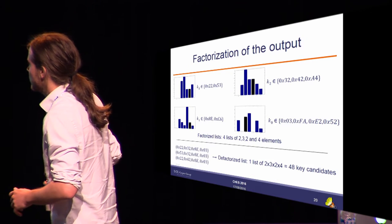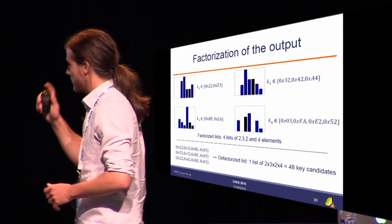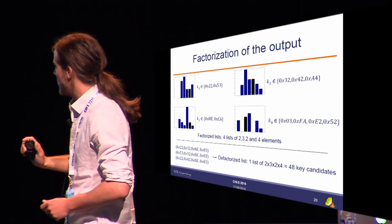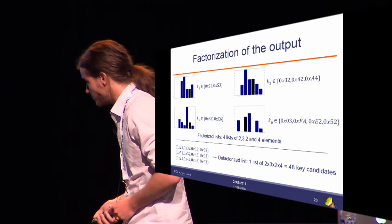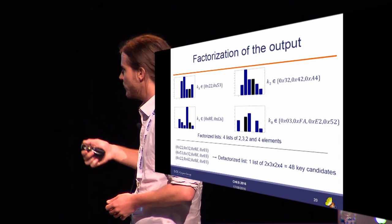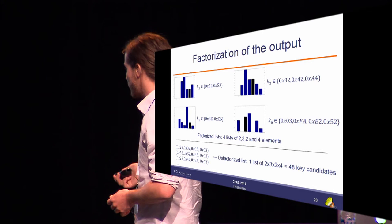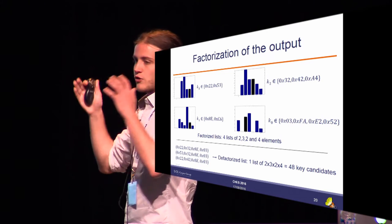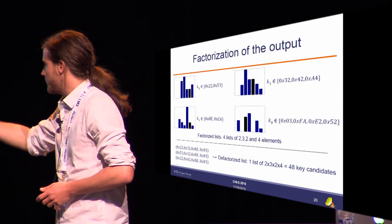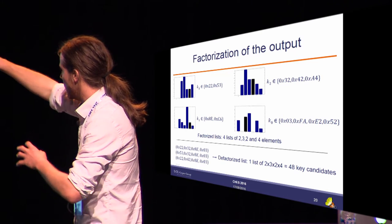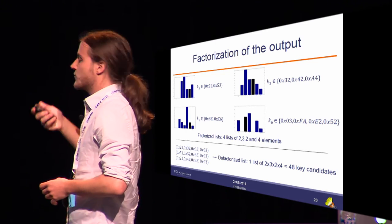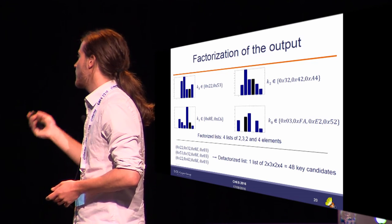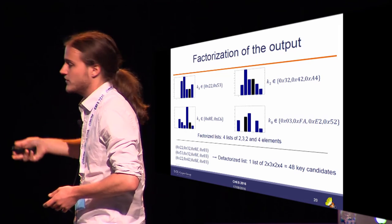This process yields a key factorization: in this example, 2 possible values for key 3, 3 for key 2, 2 for key 1, and 4 for key 0 — four lists of 2, 3, 2, and 4 elements respectively. This corresponds to 2×3×2×4 complete key candidates (the de-factorized list). In terms of memory, it's much more efficient to store the factorized list than the de-factorized one.